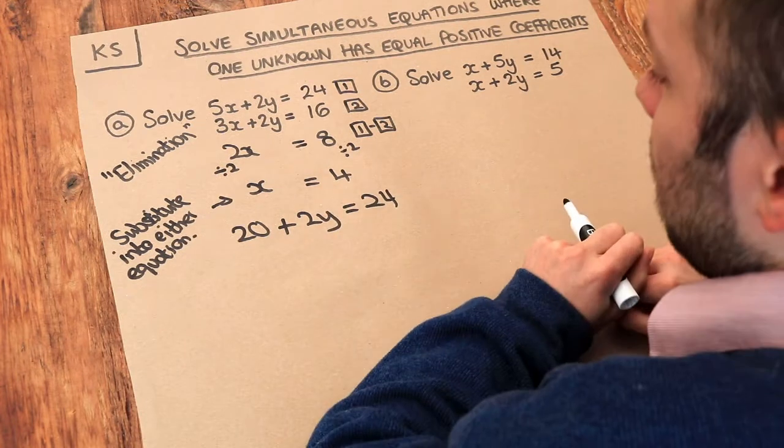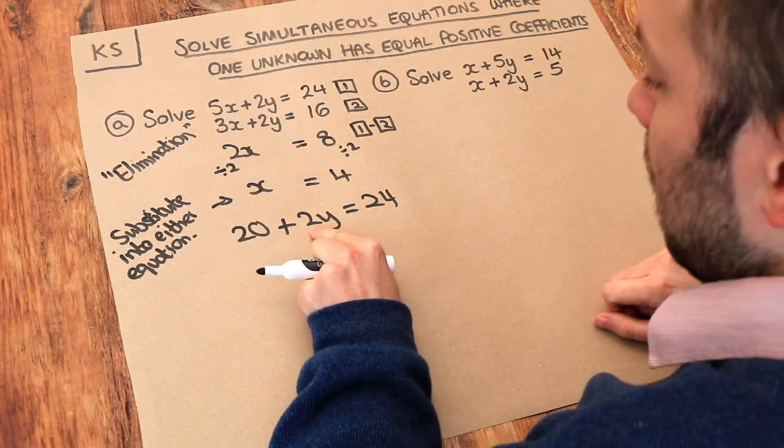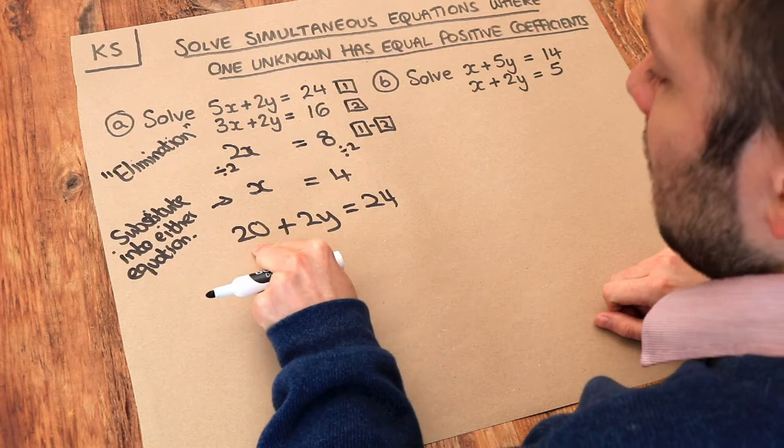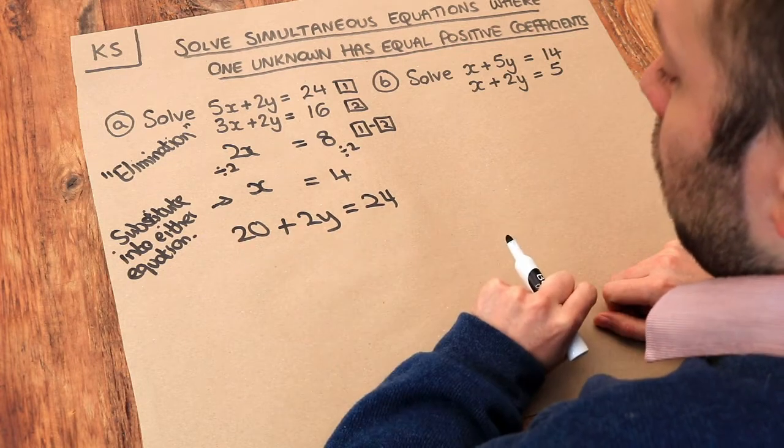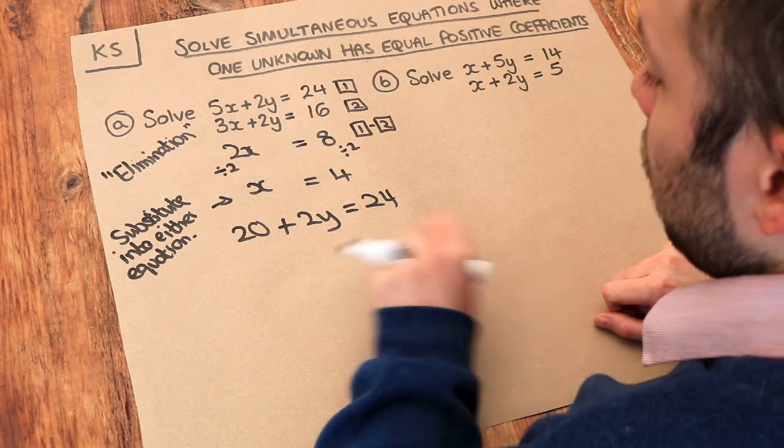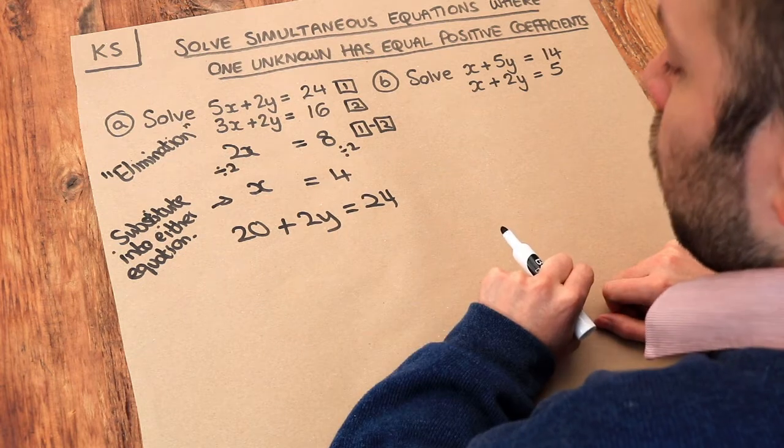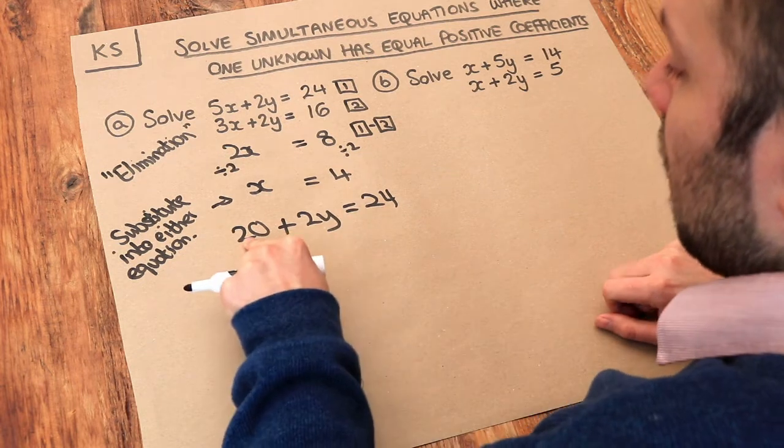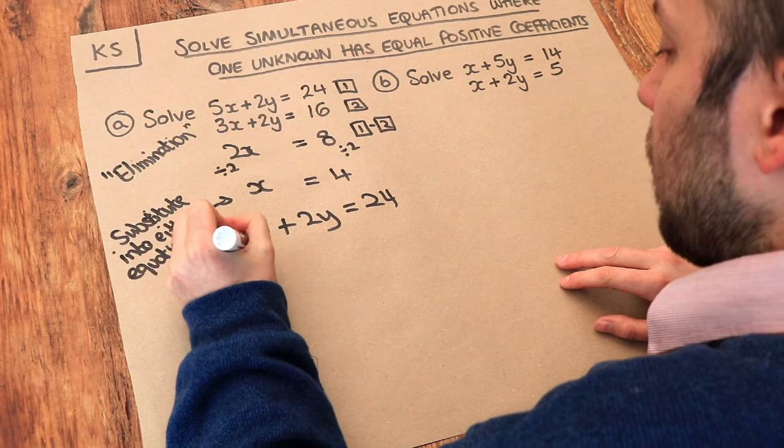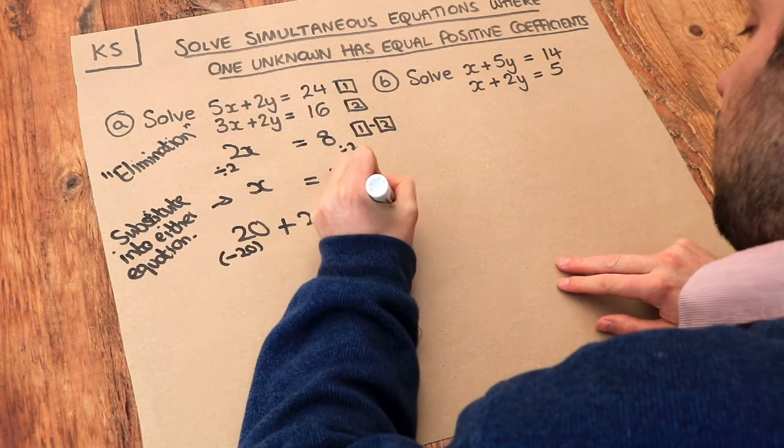And now we just have a linear equation we need to solve. So the y has been multiplied by 2 and then we've added 20 to it. We undo the things around the y to work out what y is. So we want to get rid of this plus 20 here, so I'm going to subtract 20 from both sides.